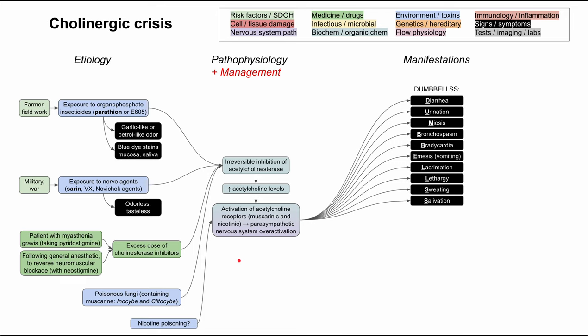The easy mnemonic to remember the manifestations is DUMBBELLS. With parasympathetic over-activation, you get: Diarrhea, Urination, Miosis (pinpoint pupils), Bronchospasm, Bradycardia, Emesis (vomiting), Lacrimation (tearing of the eyes), Lethargy, Sweating, and Salivation.